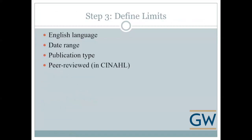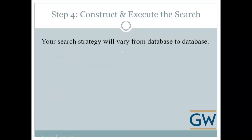When applying limits to your search, consider English language, date range such as the last five years, and publication type such as randomized controlled trials. CINAHL also lets you limit to peer-reviewed articles, which is very helpful, and has a feature to limit to specific journal subsets — for instance, to find literature specifically from nursing journals.